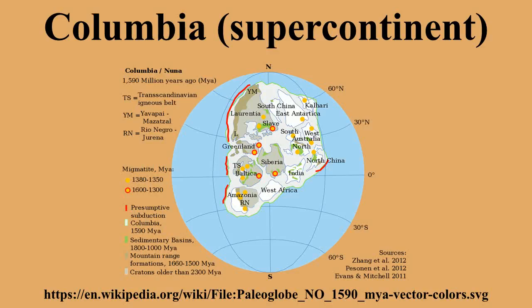The evidence of Columbia's existence is based upon geological and paleomagnetic data. Columbia is estimated to have been about 12,900 km from north to south and about 4,800 km across at its broadest part. The eastern coast of India was attached to western North America, with southern Australia against western Canada. In this era, most of South America was rotated such that the western edge of modern-day Brazil lined up with eastern North America.